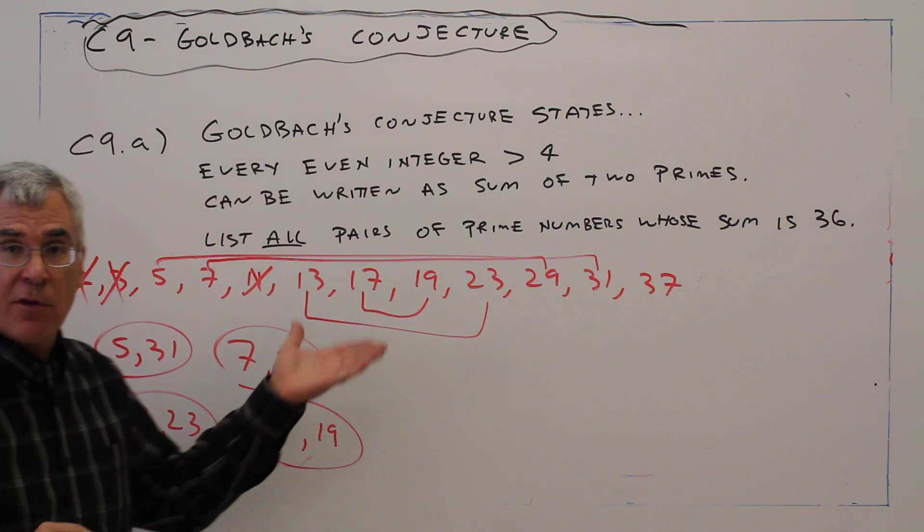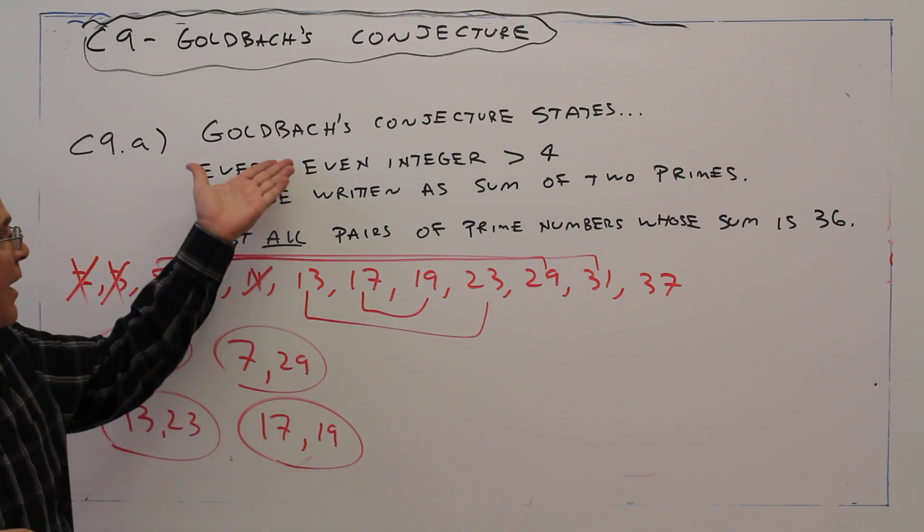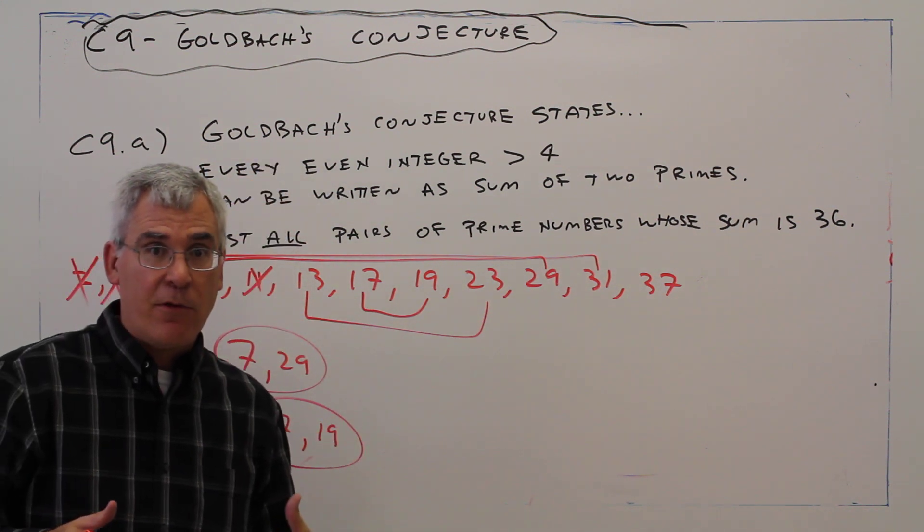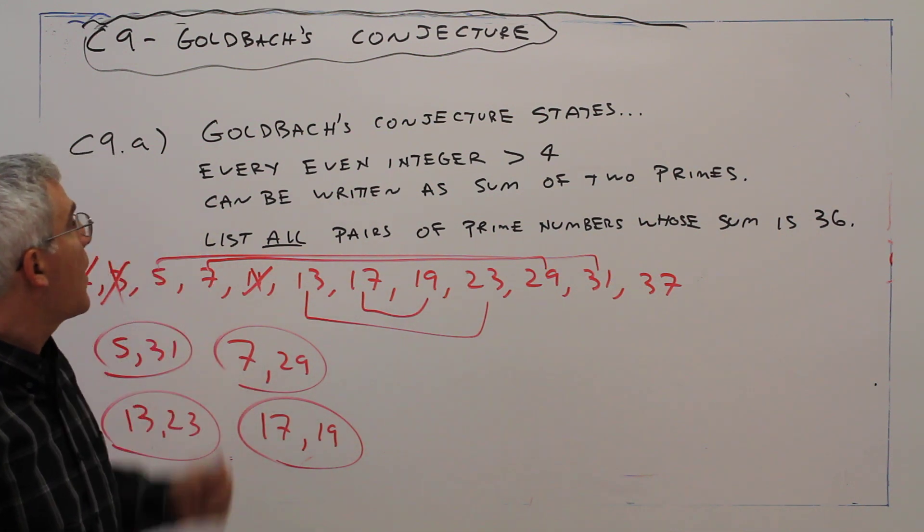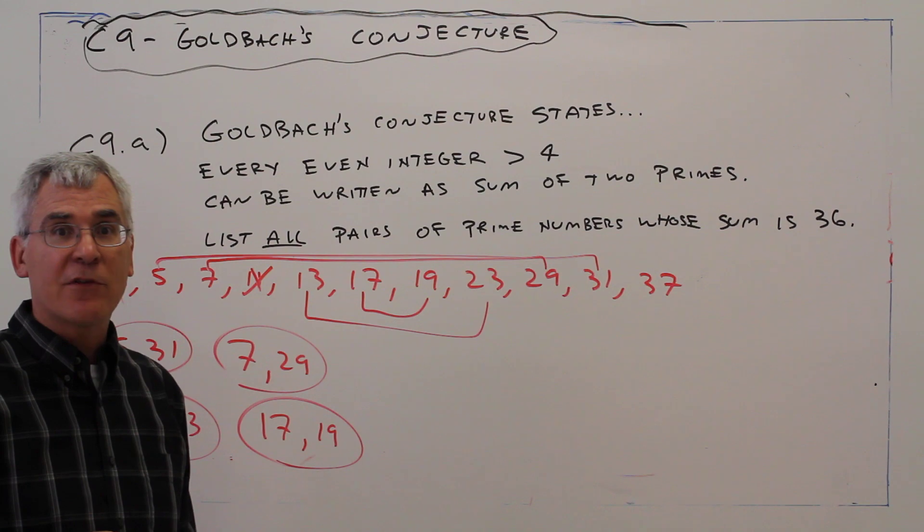So in this case, there are four pairs. Again, the conjecture would just simply state that there's at least one pair, but I wanted you to get practice writing them all. And there you have it, Goldbach's Conjecture.